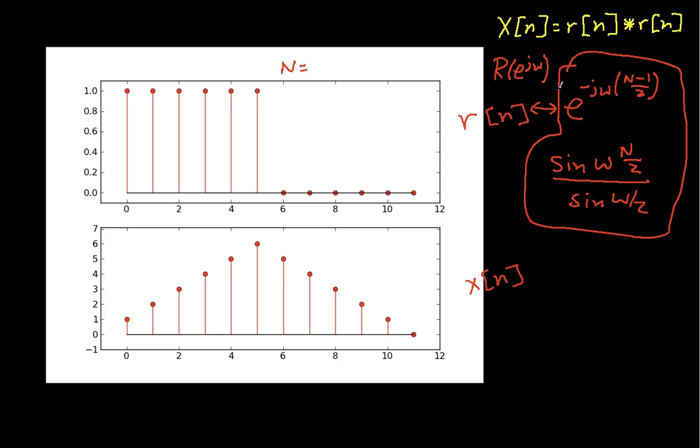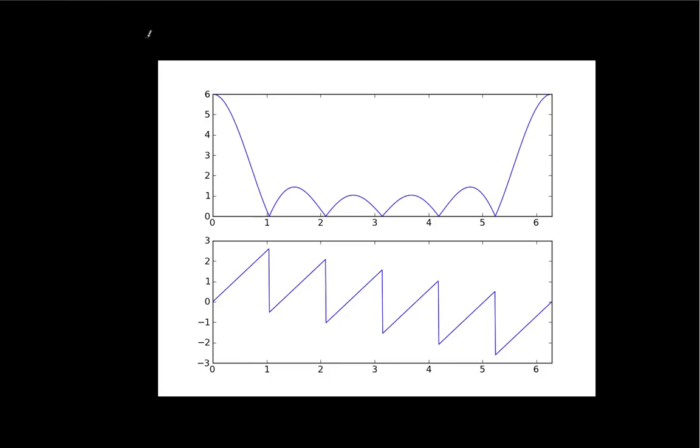I've actually got a plot here. This is R(e^jω). This is the magnitude on the top, and it's plotted between 0 and 2π. So this is 0, this is 2π. And then this is the phase angle of R.